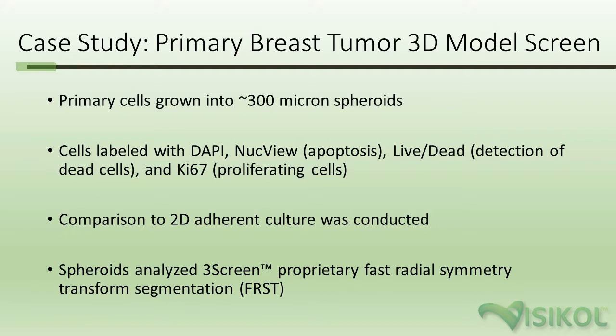The cells are labeled with DAPI, NukeVue for apoptosis, live/dead for identification of dead cells, and KI67 for proliferating cells. We compared the 2D adherent to traditional 3D through this assay, and the spheroids were analyzed using our three-screen proprietary fast radial symmetry transform segmentation approach.